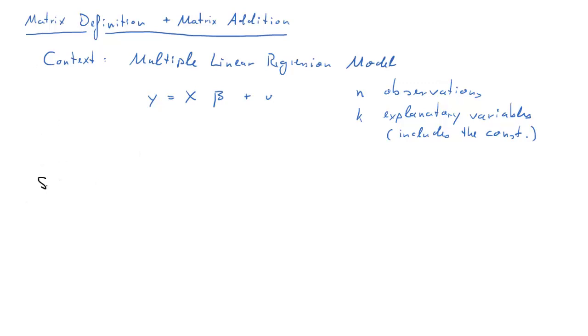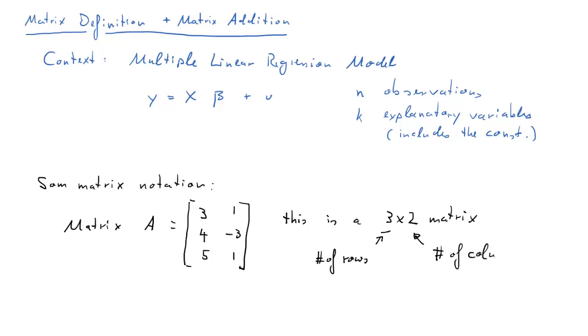Before we deal with matrix addition, you can see up there in that model there is an addition, we need to introduce some matrix notation. Let's consider the following matrix A. This is what we call a 3 by 2 matrix. It has 3 rows and 2 columns. That first number will always indicate how many rows the matrix has, and that second number will indicate how many columns that matrix has.